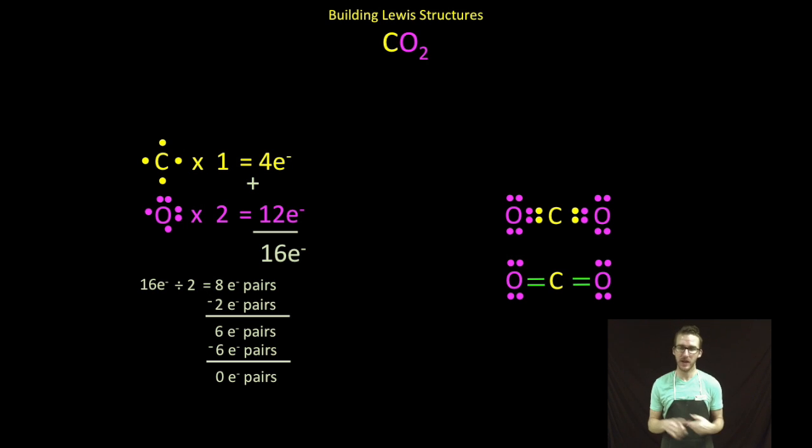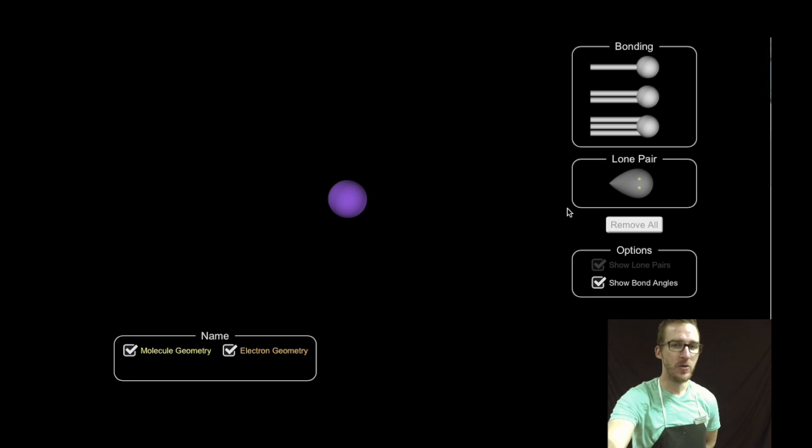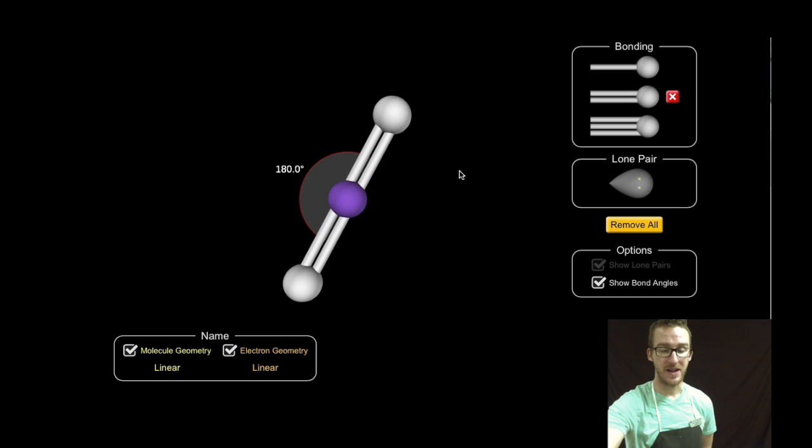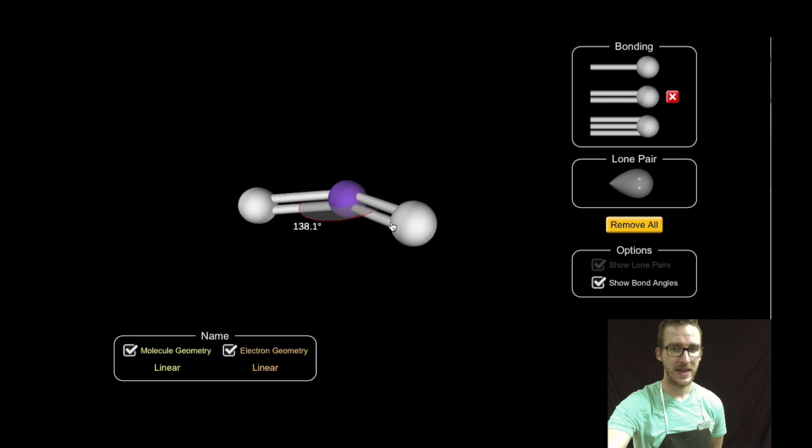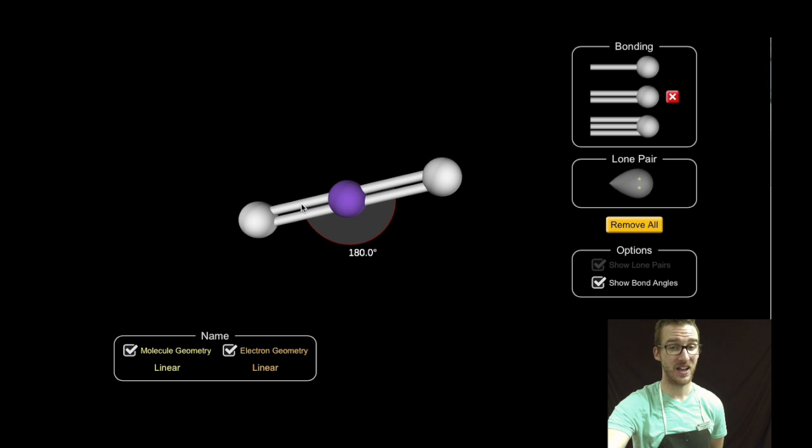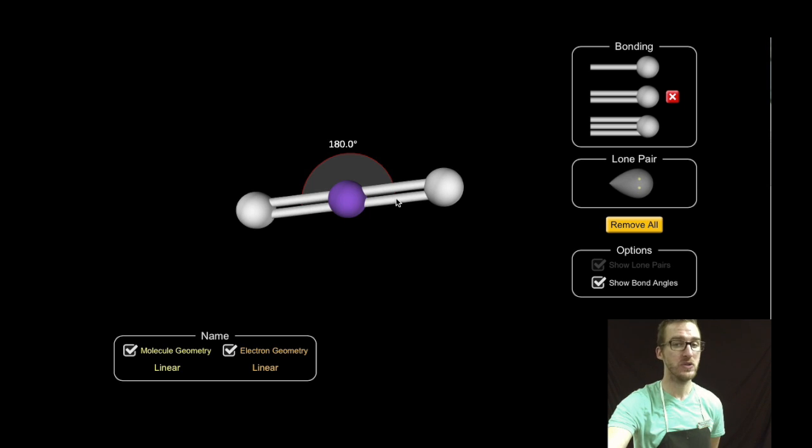Now the question becomes, what shape do the electrons have and what shape does the molecule have? To help you better visualize this, I'm going to use this simulation. I've got my central carbon atom in purple here, and I'm going to add two of my double bonded oxygens. It's important to note there are no lone pairs on my central atom in carbon dioxide. My two regions of electron density are going to want to get as far away from one another as possible. Because I only have two regions of electron density, the furthest they can get away from one another is 180 degrees.